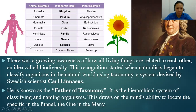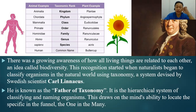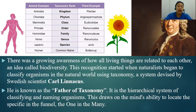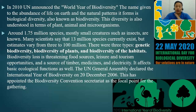Our scientific name is Homo sapiens. There were other primates like homo habilis and homo erectus, but they are not the same as us — humans have higher-order thinking skills and rational minds. Carl Linnaeus, known as the father of taxonomy, created the hierarchical system of classifying and naming organisms. In the year 2010, the United Nations announced the World Year of Biodiversity. The name given to the abundance of life on Earth and the natural patterns it forms is called biological diversity, or biodiversity.